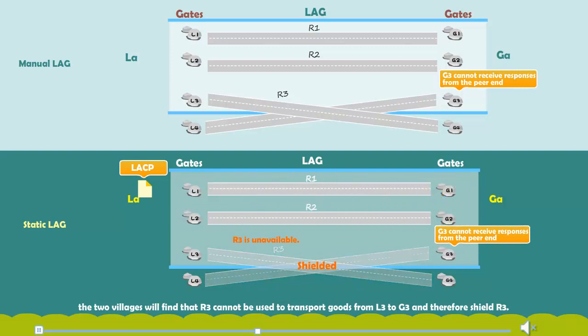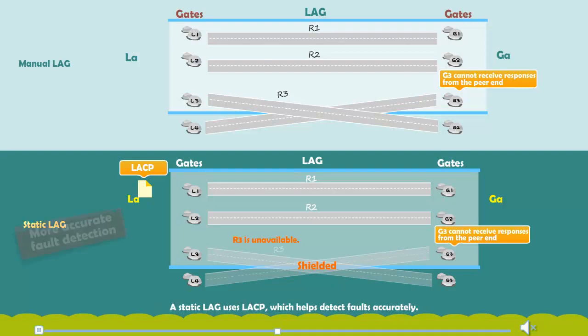This example shows that if a manual LAG is used, faults may not be detected accurately. However, a manual LAG is more effective for data transfer, so in situations where LACP is not supported, a manual LAG is still a good option. A static LAG uses LACP, which helps detect faults accurately.